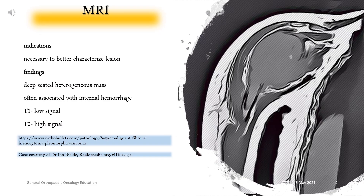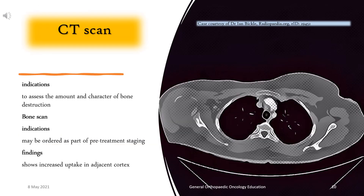MRI is necessary to better characterize the lesion. Findings include a deep-seated heterogeneous mass, often associated with internal hemorrhage. Signal characteristics show T1 low signal and T2 high signal.